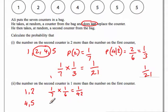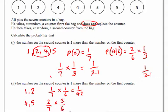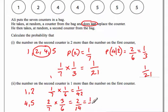The probability of getting a four followed by a five: there are two fours, so that's two out of seven to start with. Then to get a five, there are three fives, so that's three out of six for the second pick. That works out to two over fourteen, which simplifies to one over seven.